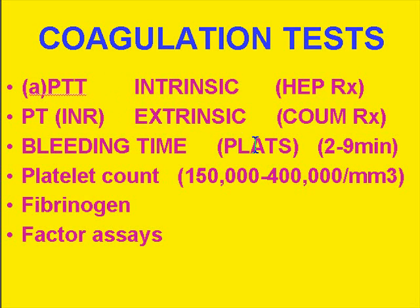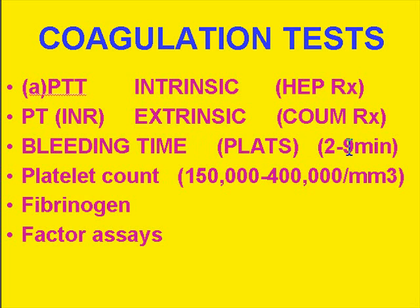Another useful general screening test for coagulation — one that everybody gets in the hospital anyway — is simply the platelet count, which is normally about 150,000 to 400,000. The bleeding time, normally two to nine minutes, is a test of platelet number and function. If you have a normal platelet count but an abnormal bleeding time, it means your platelets probably aren't working well. Bleeding time measures how long you keep blotting blood from a small cut; beyond nine minutes is elevated.